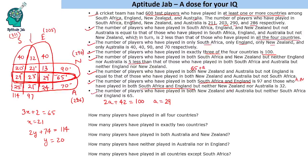Now let us answer the questions. How many players have played in all 4 countries? This is 23. How many players have played in exactly 2 countries? These are the players in all the 2-country only intersections. Adding those values: 45 + 20 = 65, then + 65 = 130, then + 49 = 179. So 179 players have played in exactly 2 countries.